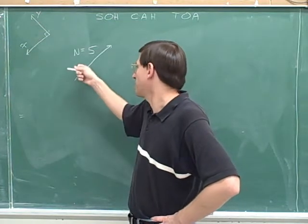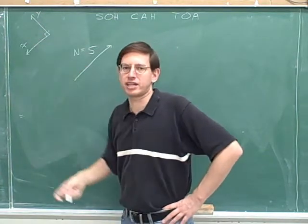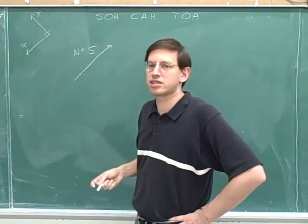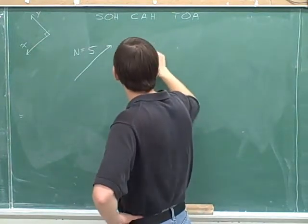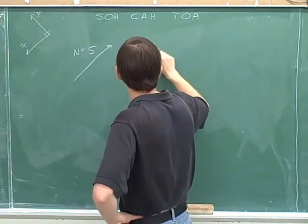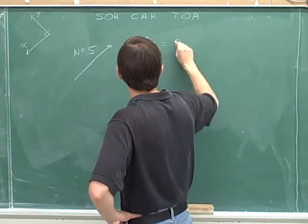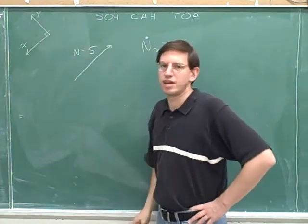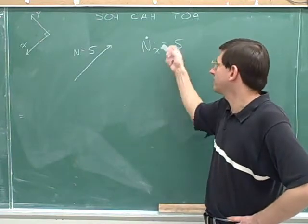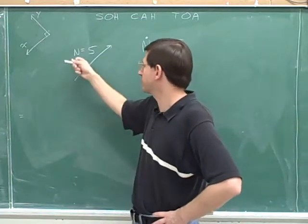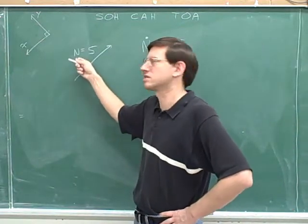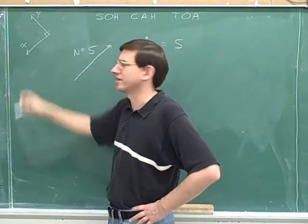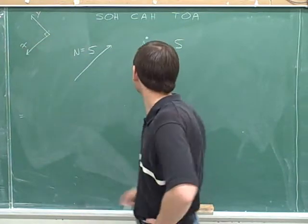Since this is actually anti-parallel to the x-axis, there is no y-component — it's only an x-component. The vector has a length of 5, and that means that the x-component has a length of 5, because there's nothing but an x-component in this vector. It's completely parallel, or rather anti-parallel, to the x-axis. There is no y-component.